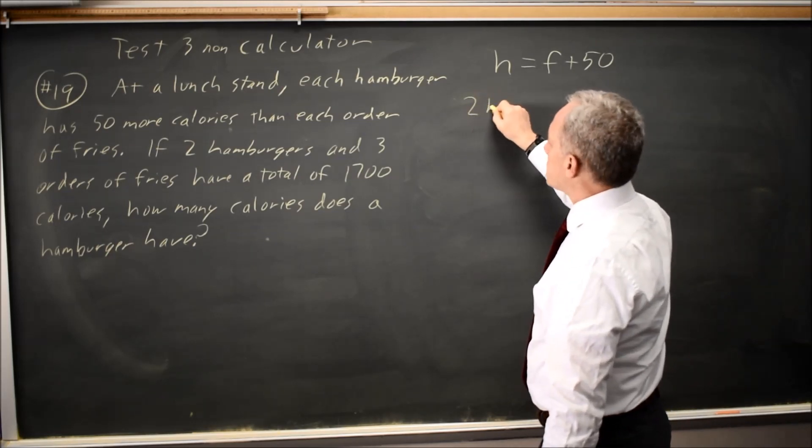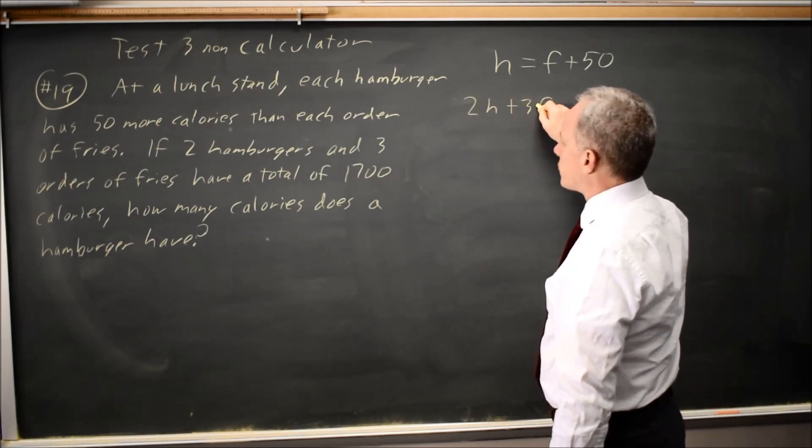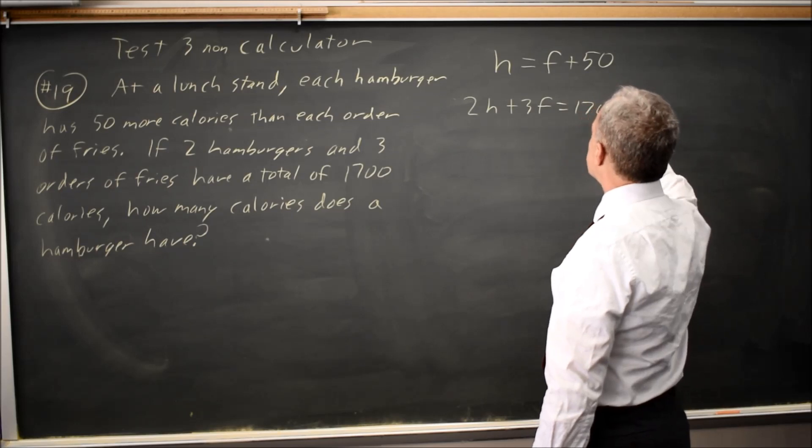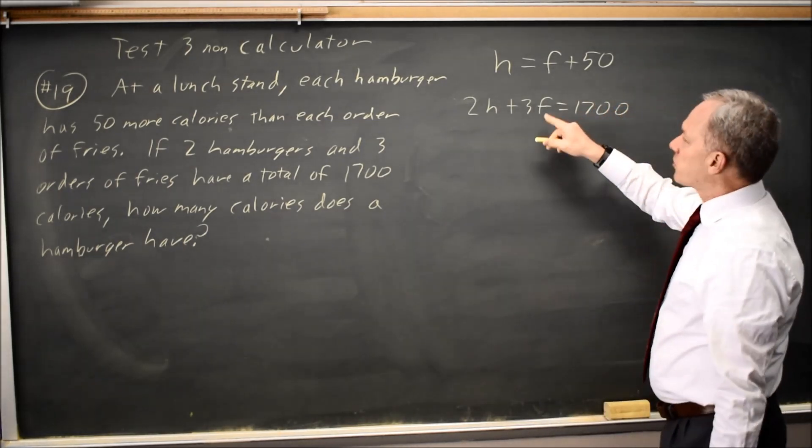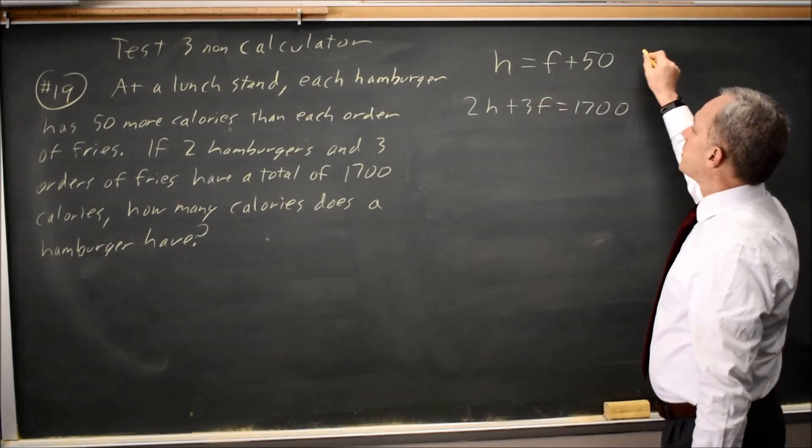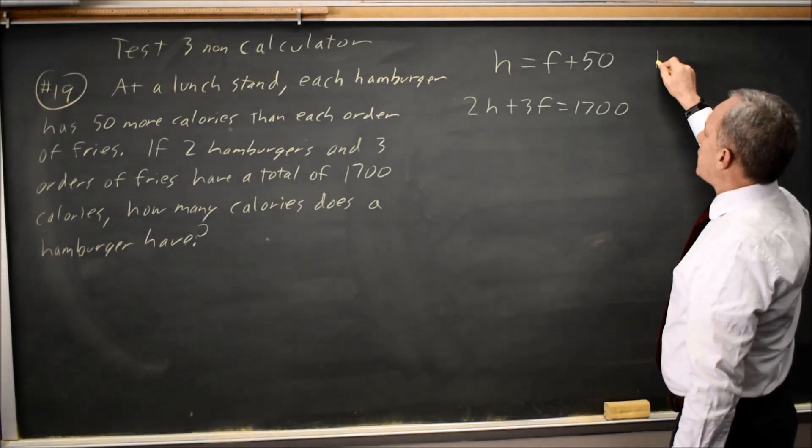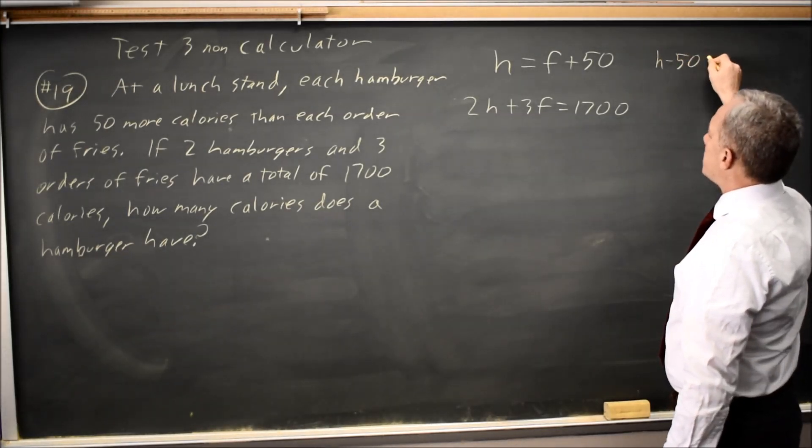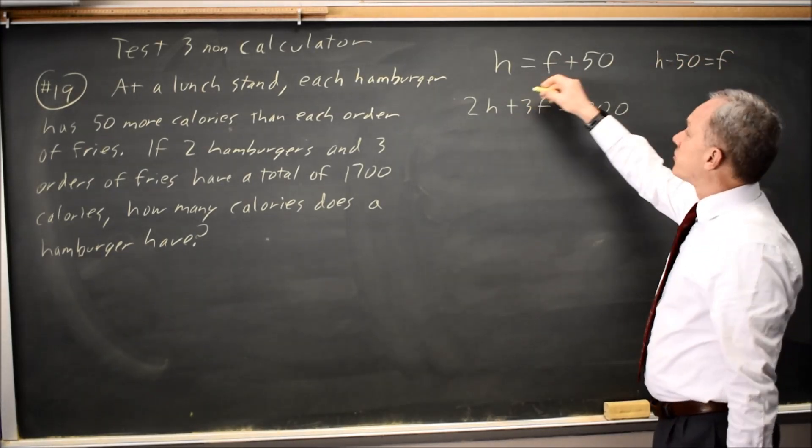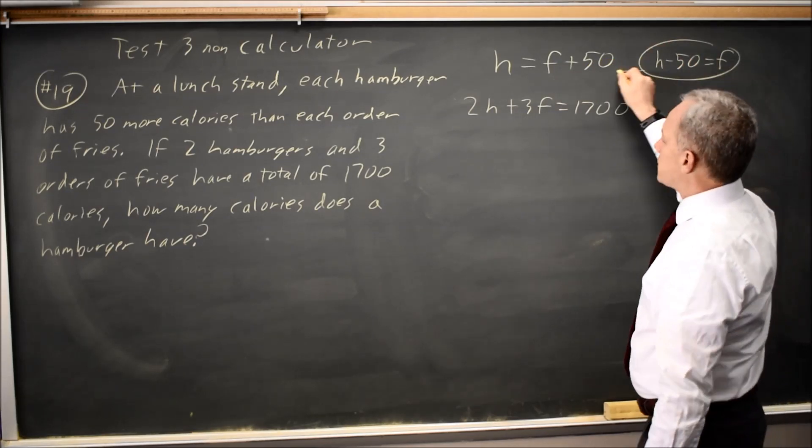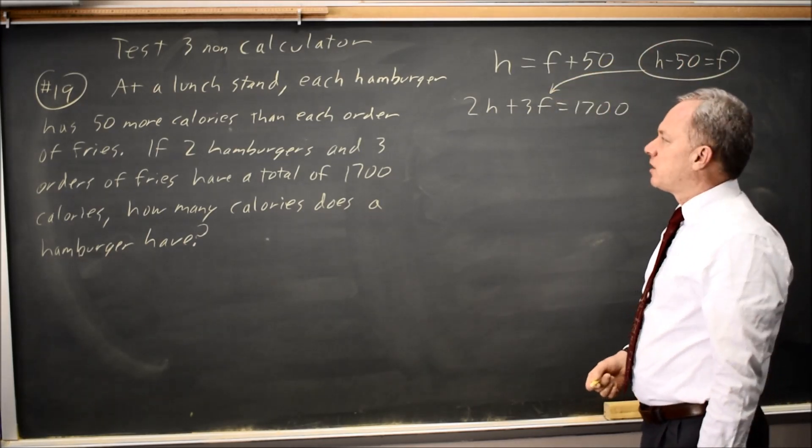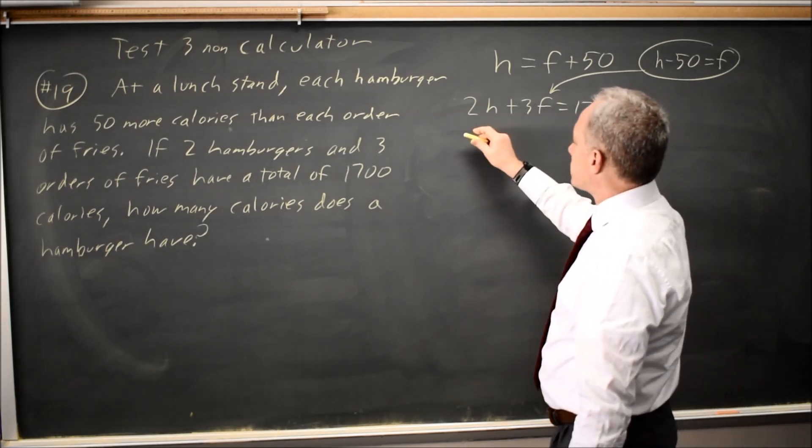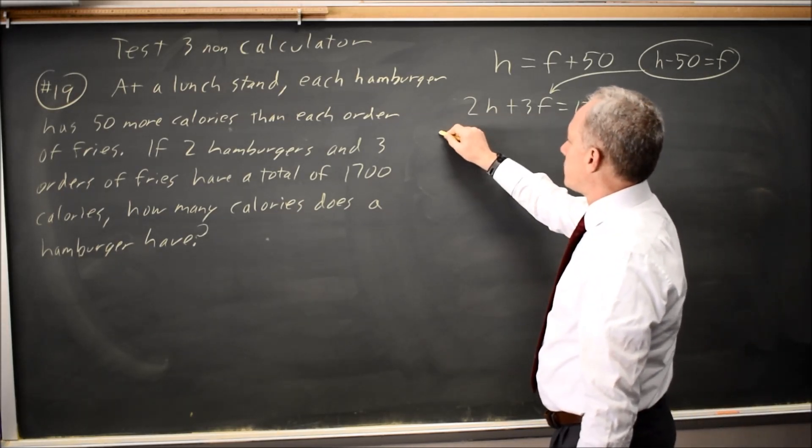I'm also told twice the number of hamburgers plus 3 times the number of fries equals 1,700. Well, I'm looking for hamburger, so let's rewrite this as H minus 50 equals F, subtracting 50 from each side. I can substitute this expression in for the number of fries in my other equation and solve for H, the number of calories per hamburger.